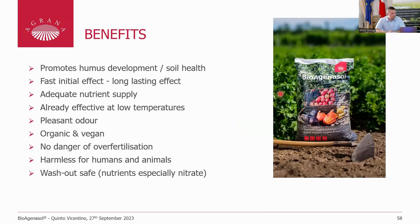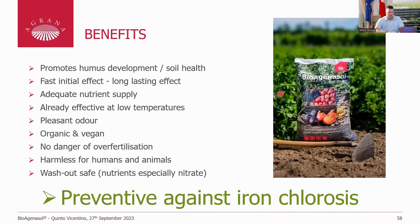The benefits of this product include promoting humus development and soil health. Bio-organozol also has a fast initial effect — the mineralization of nitrogen is rapid — and also has a long-lasting effect over the next two to three years. It provides adequate nutrient supply and is effective at low temperatures, which is necessary for example when cultivating spinach in February. It has a pleasant odor, so it is not a smelly fertilizer. It is organic and fully vegan, with no danger of over-fertilization and harmless for humans and animals. Trials have also measured no nitrogen leaching.